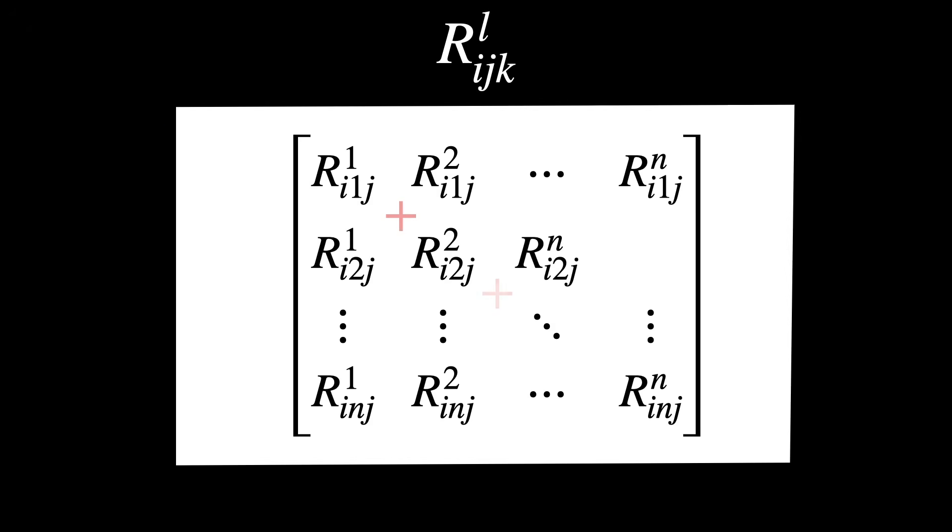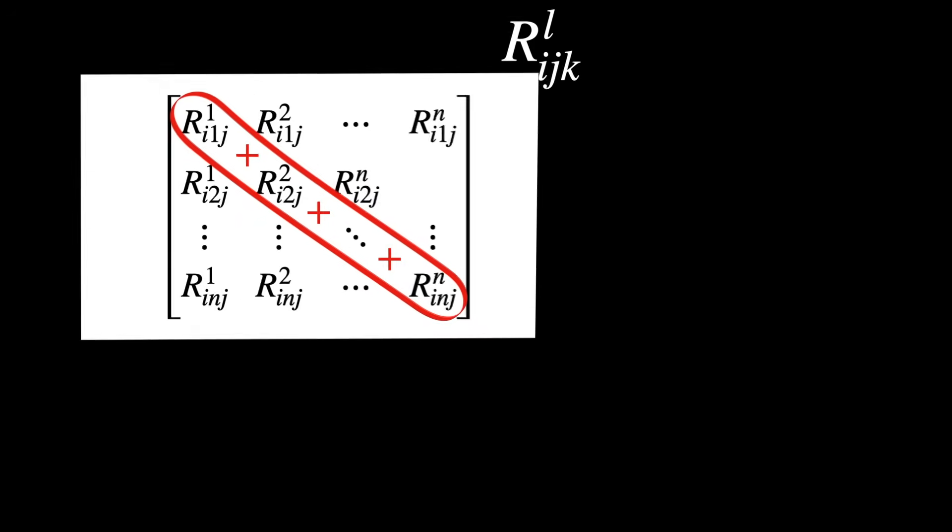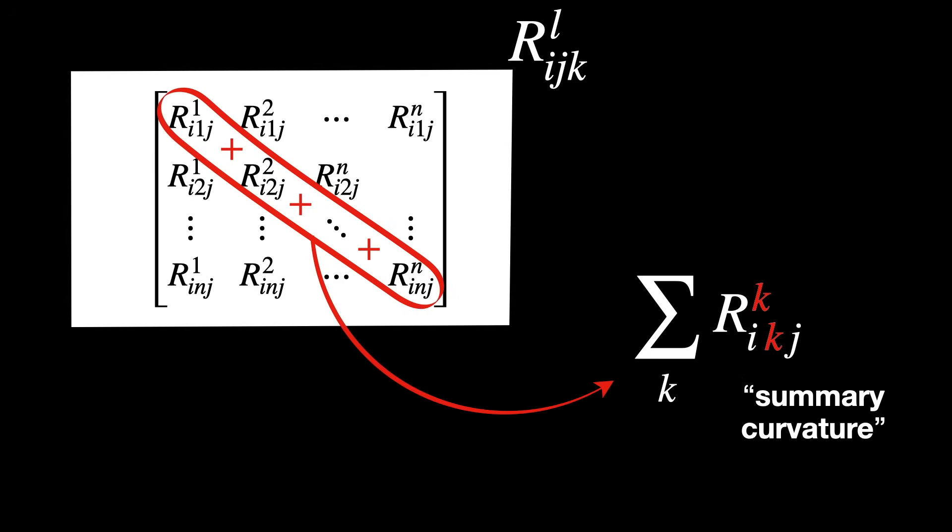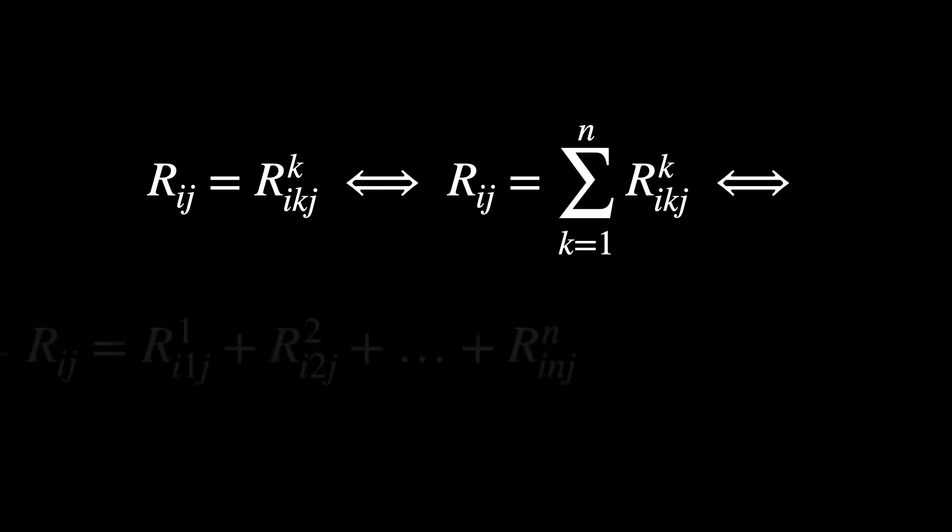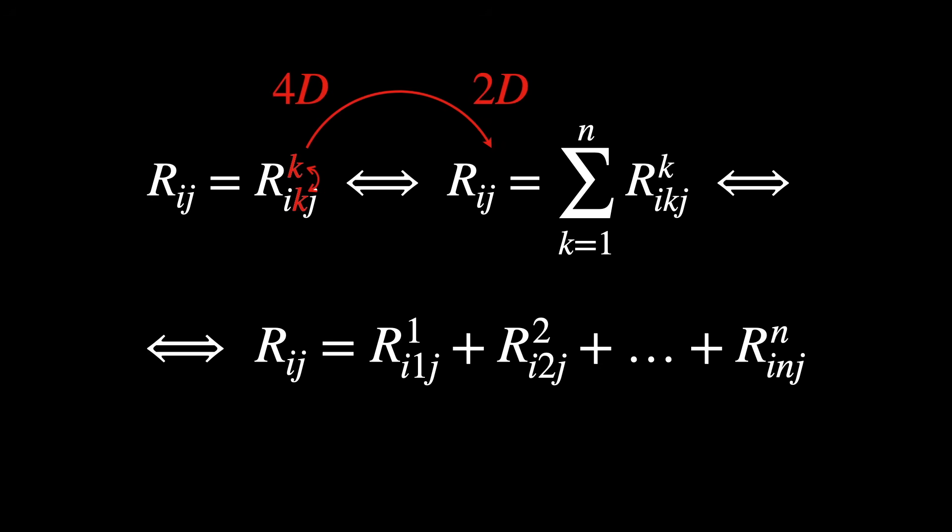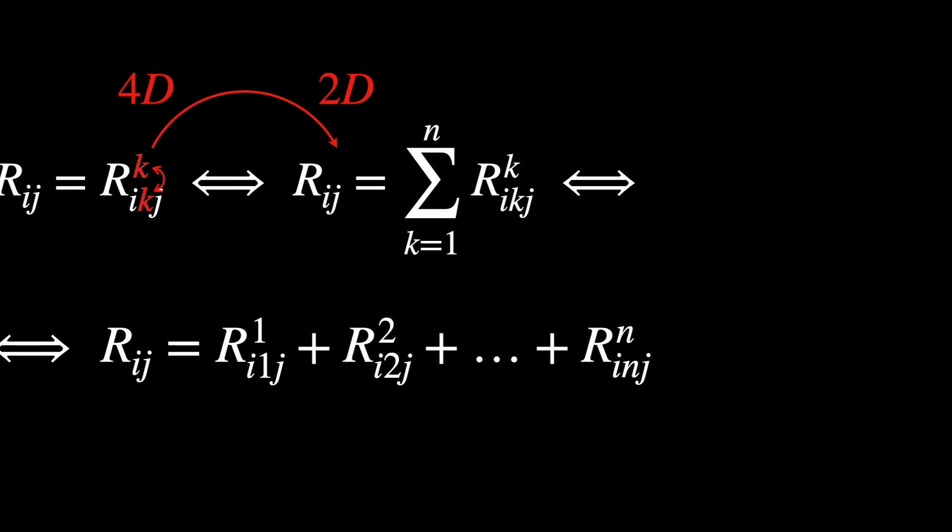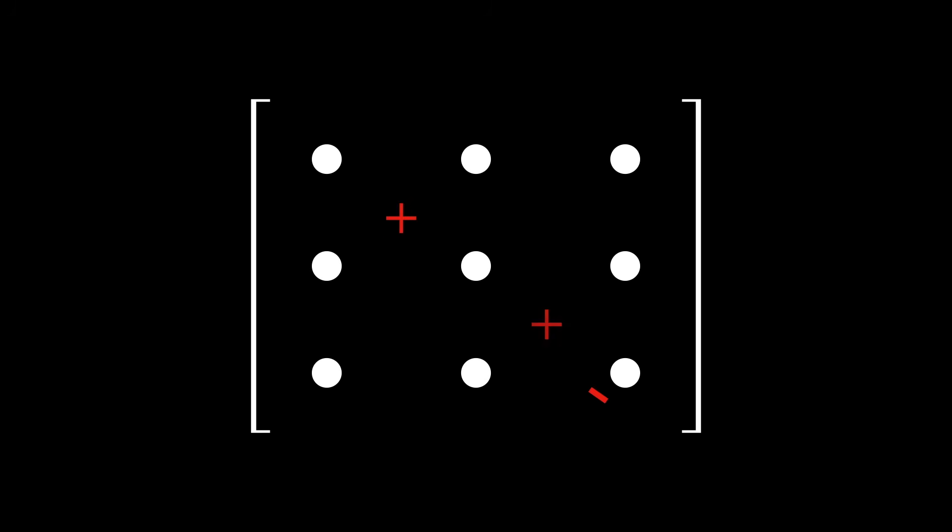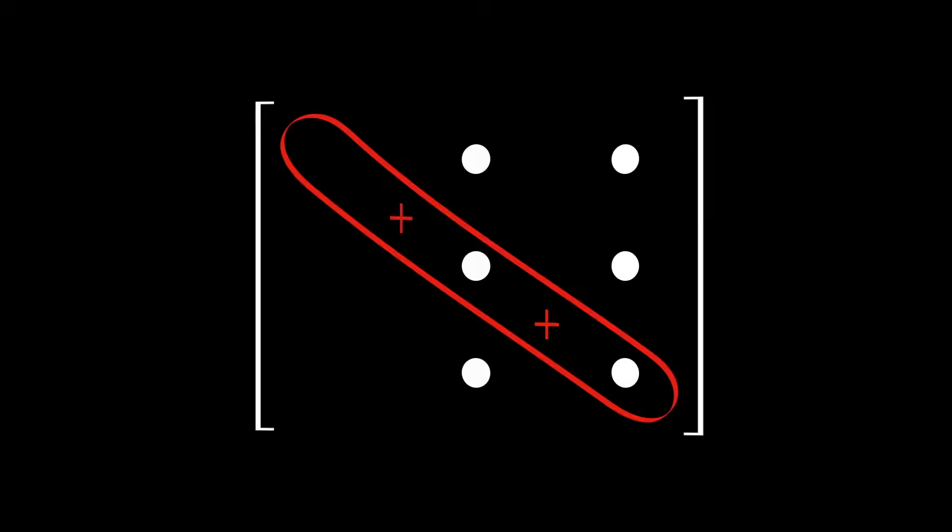and then we add up a row of values in a particular cross-section. The result is a sort of summary of the curvature in each direction. This process is called a contraction. It is actually just a fancy word for summing along a repeated index which shrinks the dimensionality of the object, like from four to two dimensions. It is similar to taking the trace of a matrix but extended to higher dimensions.